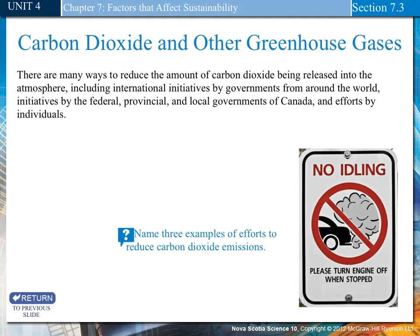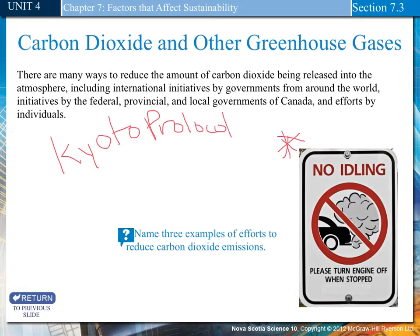Name three examples of efforts to reduce carbon dioxide. One example is the no-idling sign outside our school — we're releasing less CO2 into the atmosphere. You may have heard of the Kyoto Protocol — an international agreement of over 180 countries to reduce emissions. It was an international effort to reduce CO2 emissions.